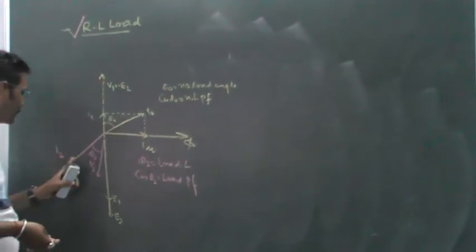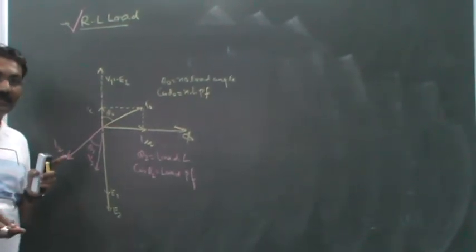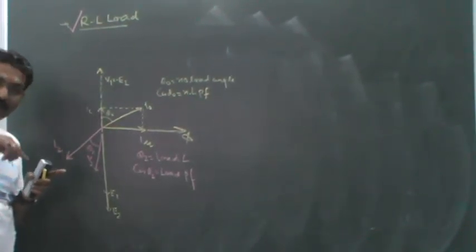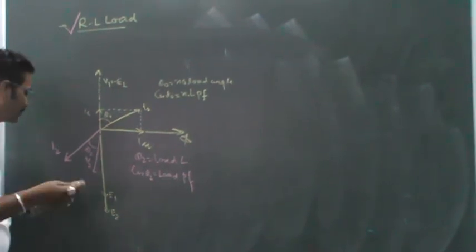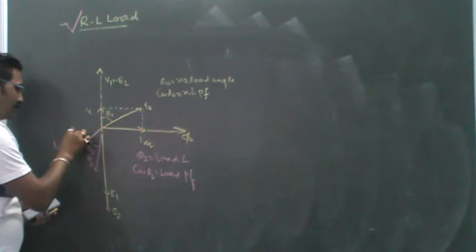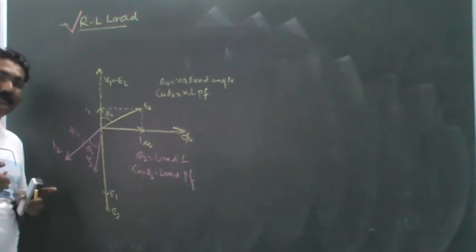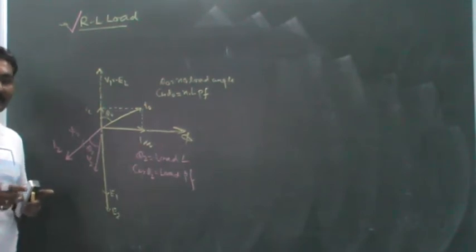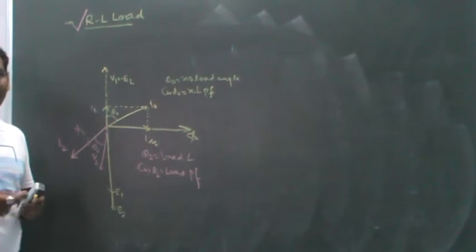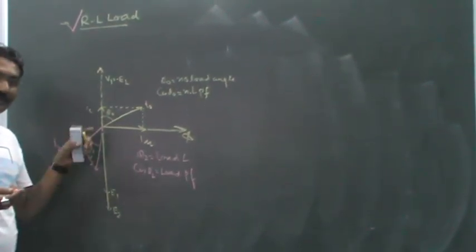Now, this load current I2 will establish flux phi2, and since phi2 is proportional to I2, it can be drawn in the direction of I2. To compensate this flux phi2, a current I1' starts flowing in the primary circuit, which is called the load component of primary current. This has to be just opposite to I2.